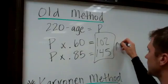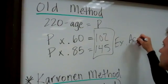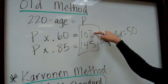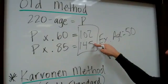So remember in my example, this is the 50 year old person. Their range is 102 to 145.